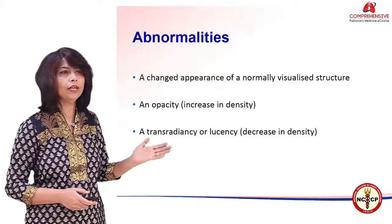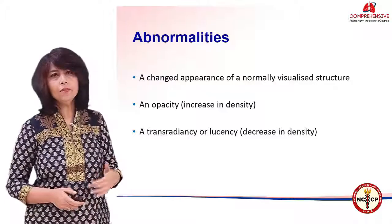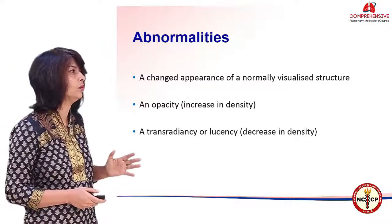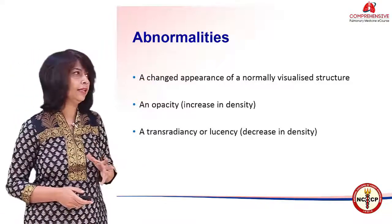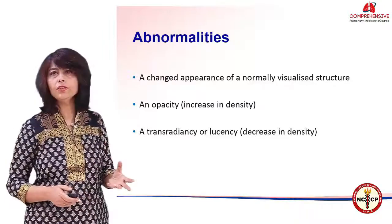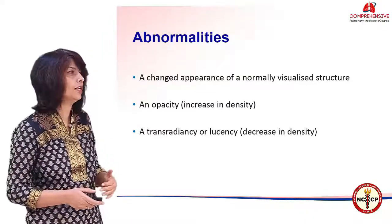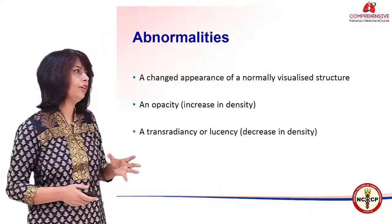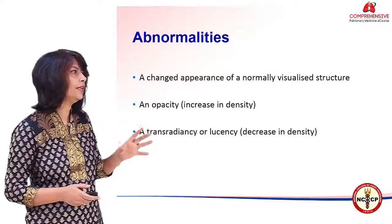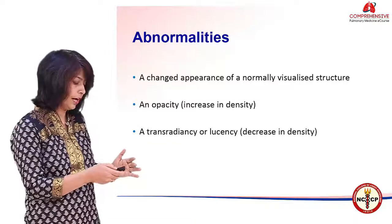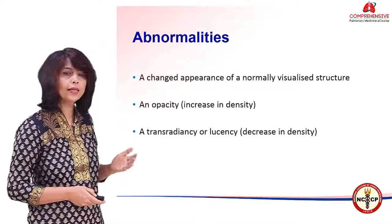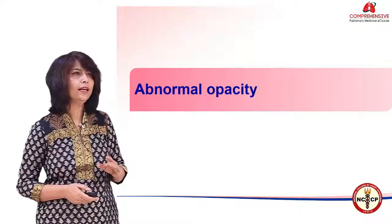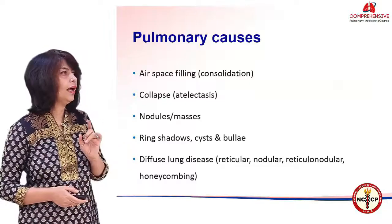Most terms I quote will take into account the Fleischner Society statement. Some lesions they don't refer to but we discuss often, so I will use those words as well. An abnormality could be a normal structure which is changed in appearance — for instance, the diaphragm is raised or the hilum is enlarged. Opacity means increase in density, something which is whiter, while transradiancy or lucency means decrease in density. We first start with abnormal opacities; lesions can be pulmonary and extra-pulmonary.